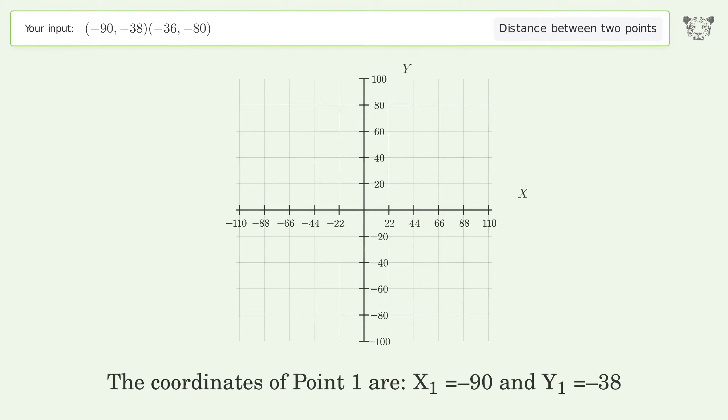The coordinates of Point 1 are x1 equals negative 90 and y1 equals negative 38. The coordinates of Point 2 are x2 equals negative 36 and y2 equals negative 80.